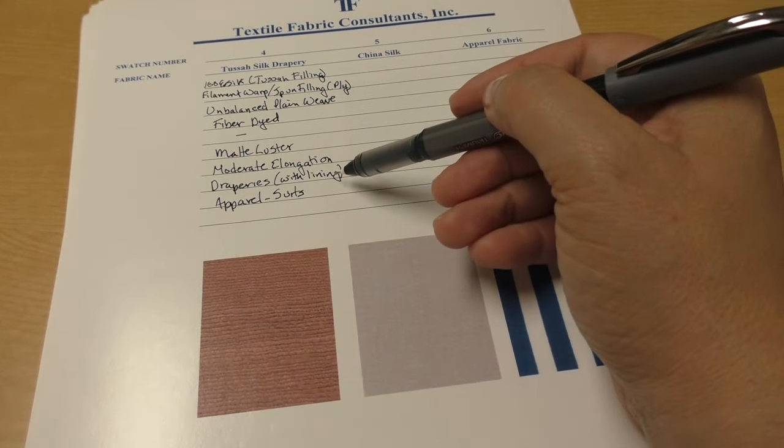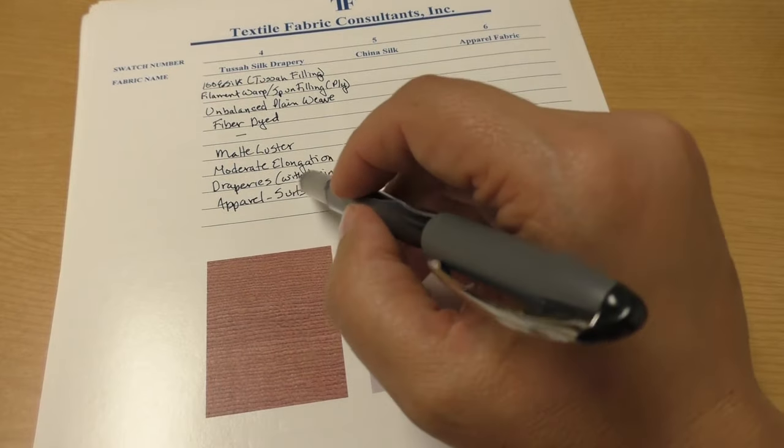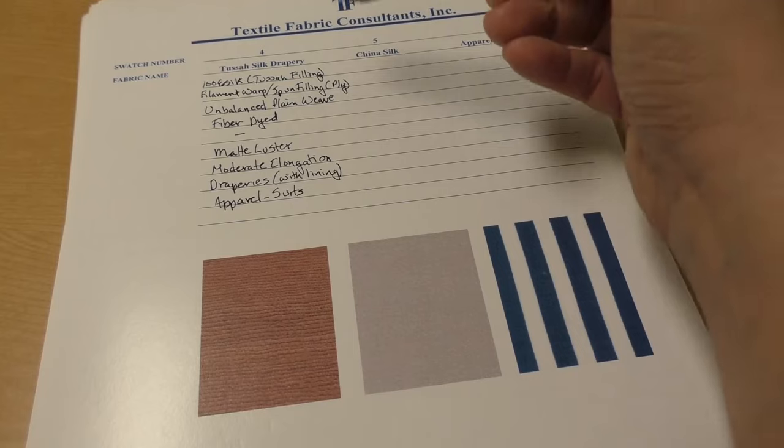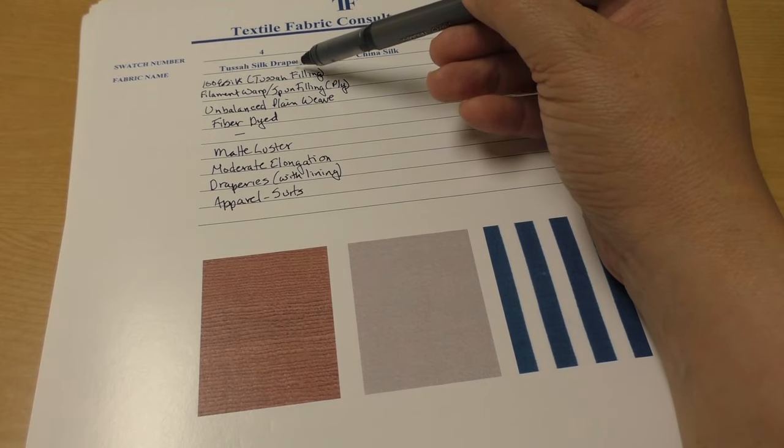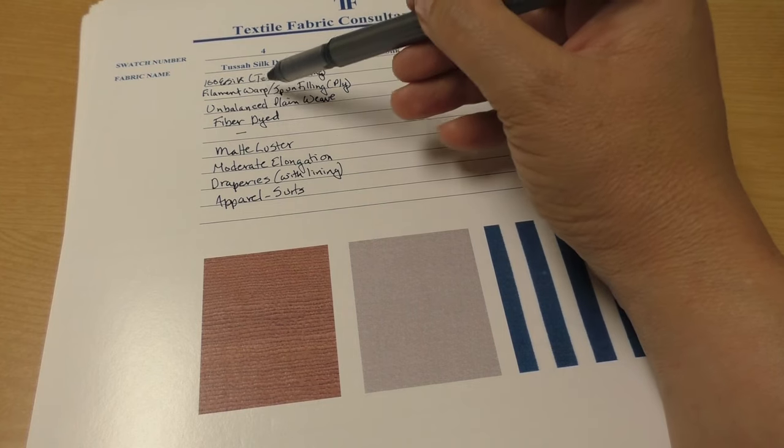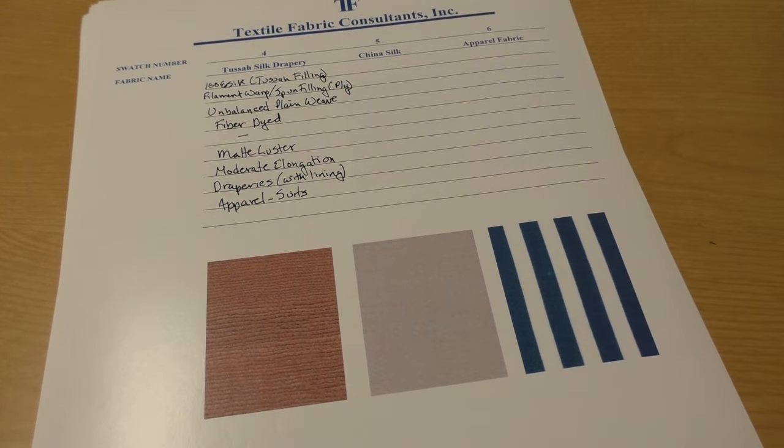You have to look in your notes on silk to see why the end use of drapery requires a lining. As you can see here, this Tassa silk drapery made with Tassa filling uses a filament yarn in the warp direction and a spun yarn in the filling direction.